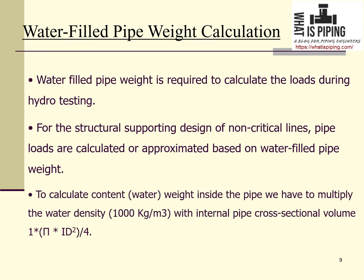Now, water-filled pipe weight calculation. Water-filled pipe weight is required to calculate loads during hydro testing. It is also used for structural support design of non-critical lines where stress analysis is not performed — loads are approximated based on water-filled pipe weight. We have already calculated the empty pipe weight; the next step is to calculate the weight of the content inside the pipe, which in this case is water. Water density is 1000 kg/m³, and the content fills the internal cross-sectional area of the pipe.